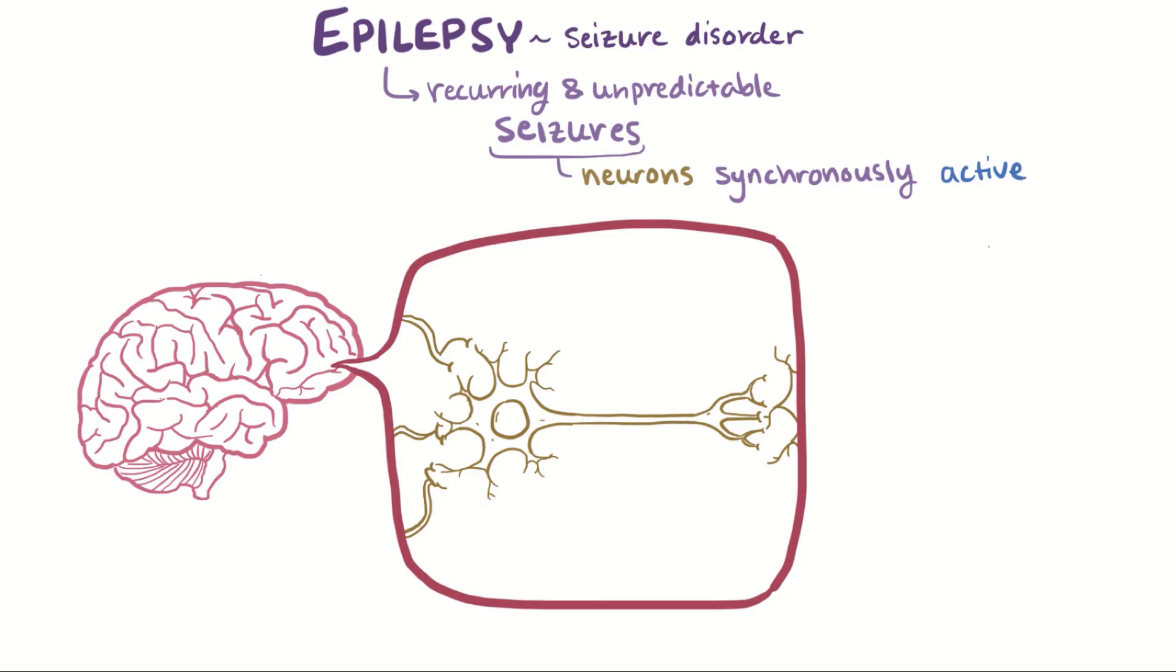Now when I say neurons are active, I mean that they're firing, or sending a message using electrical signals relayed from neuron to neuron.